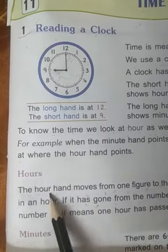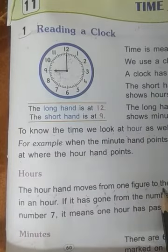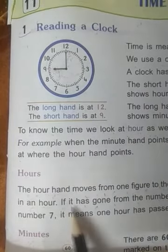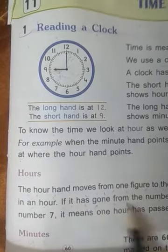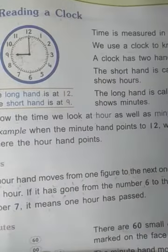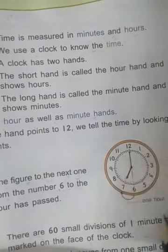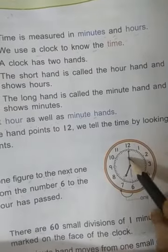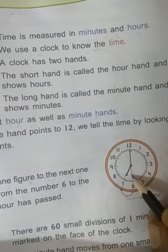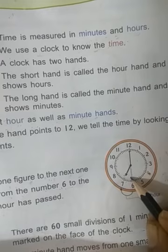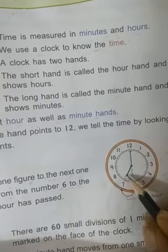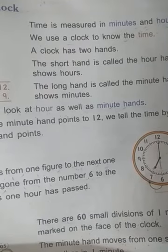The hour hand moves from one figure to the next one in an hour. If it has gone from the number 6 to 7, it means one hour has passed. Here is one hour from 6 to 7: short hand at 6, and now it is at 7 — so one hour has passed.